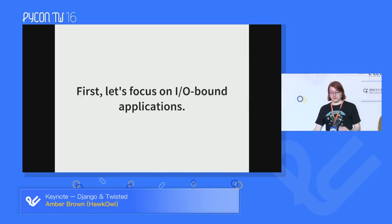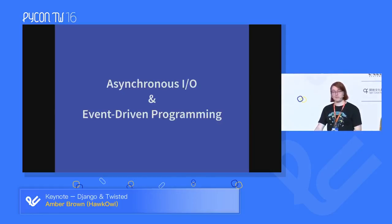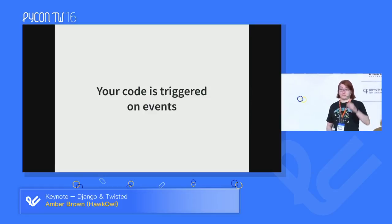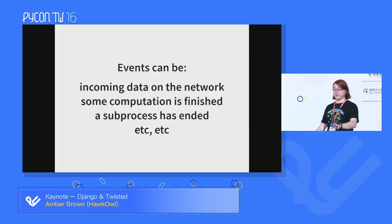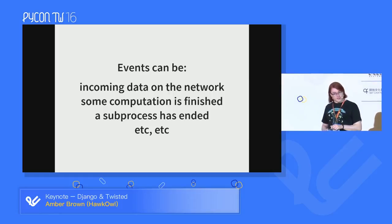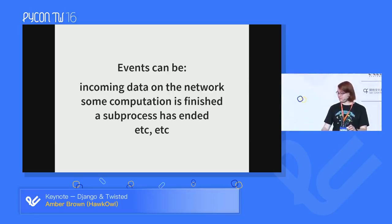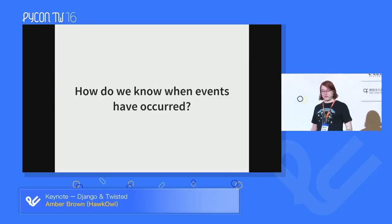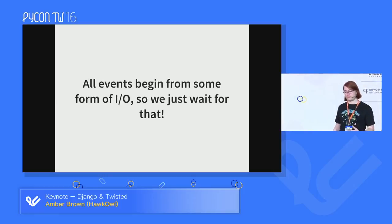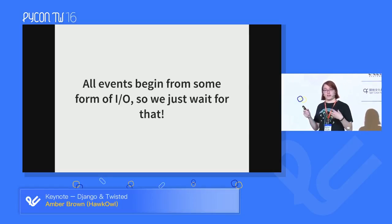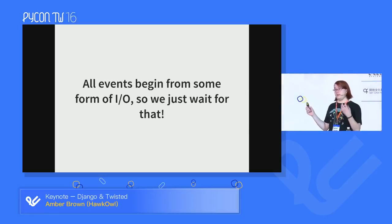We can solve these issues, but let's focus first on IO-bound applications. I'd like to talk about asynchronous IO and event-driven programming. Event-driven programming is when your code is triggered on events. These events can be many things — mostly incoming data on the network, some computation finishing, or a sub-process ending. Basically anything that happens can become an event. Everything really starts from input and output, so all we need is asynchronous IO that is event-driven, and the events made from incoming data are therefore event-driven.